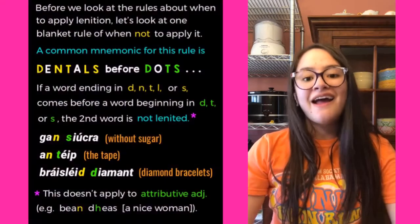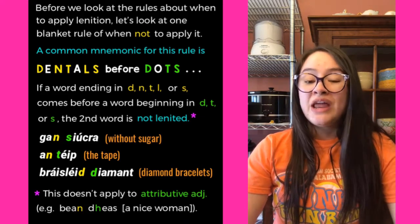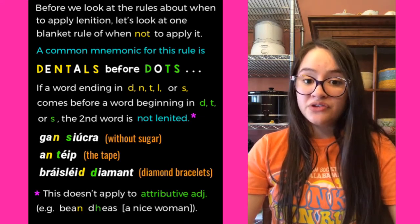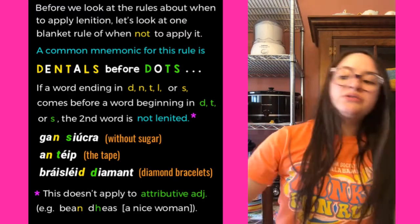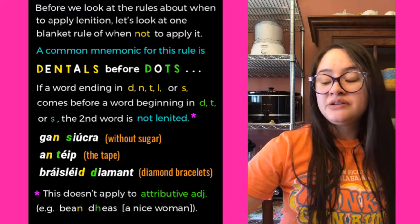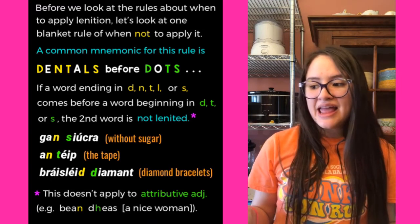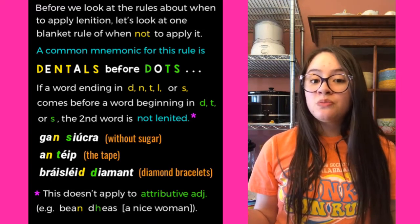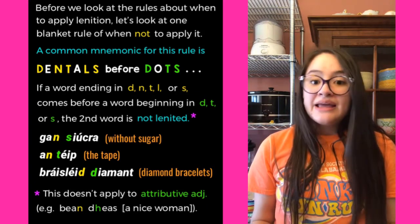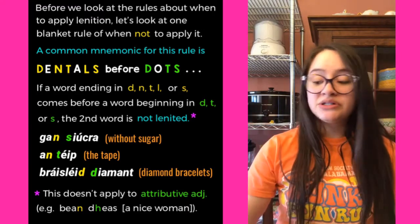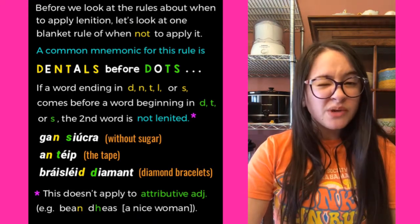Before we look at the rules about when to apply lenition, let's look at one blanket rule for when NOT to apply it. A common mnemonic is 'dentals before dots.' If a word ending in D, N, T, L, or S comes before a word beginning with D, T, or S, the second word is not lenited, even in a situation where it normally would be. However, this does not apply to attributive adjectives.